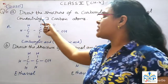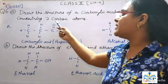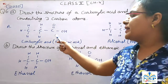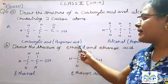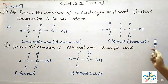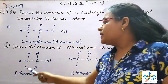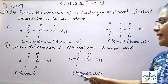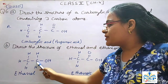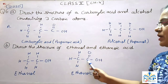Our next important question is: Draw the structure of a carboxylic acid and alcohol containing three carbon atoms. The carboxylic acid containing three carbon atoms is propanoic acid, and the alcohol with three carbon atoms is propanol. Also, draw the structure of ethanol and ethanoic acid. Ethanol has two carbon atoms; similarly, ethanoic acid has two carbon atoms. The OH group is attached to the first carbon atom, and the carboxylic group is attached to the first carbon atom.